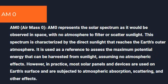AM0 represents the solar spectrum as it would be observed in space, with no atmosphere to filter or scatter sunlight. This spectrum is characterized by the direct sunlight that reaches the Earth's outer atmosphere. It is used as a reference to assess the maximum potential energy that can be harvested from sunlight, assuming no atmospheric effects.